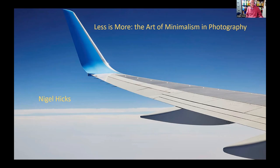Minimalist photography really can stretch across all sorts of genres: architecture, travel, landscape, wildlife, and then into fine art photography and still life. As most of you will probably know, a lot of my photography is about water, so most of the images this evening will involve water. But I'm going to start off with a collection of a few other images initially, just to give you a taste of some of the types of minimalist photography you might encounter.